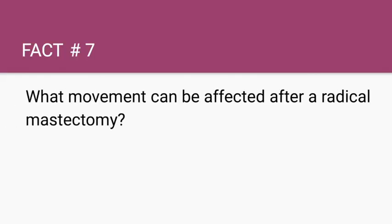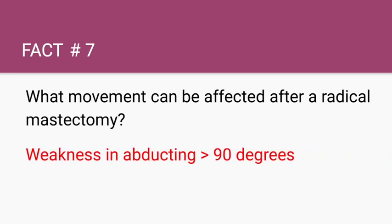What movement can be affected after a radical mastectomy? Weakness in abducting greater than 90 degrees. Remember that when a patient has a radical mastectomy, the nerve most likely to be injured is the long thoracic nerve. With injuries to the long thoracic nerve, patients can develop a winged scapula due to the serratus anterior being affected, which is why they have weakness in abduction greater than 90 degrees.